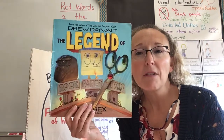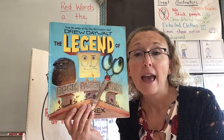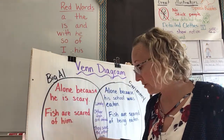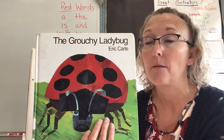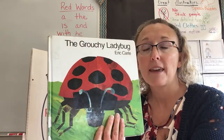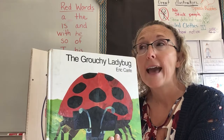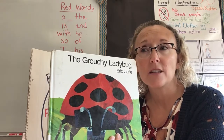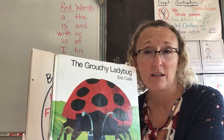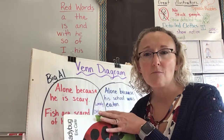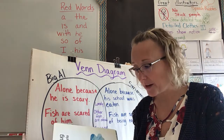We're going to be thinking about the character Rock in this book and we're going to be comparing it to a character in this book — the Grouchy Ladybug. As I'm reading, I want you to try to remember Rock from the book and see if you have any connections about how they are the same or how they are different. So think about connections you might have between the two characters. Here we go.